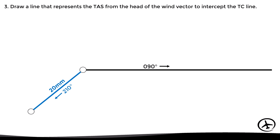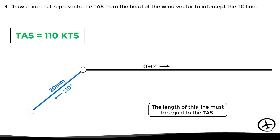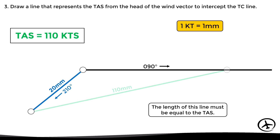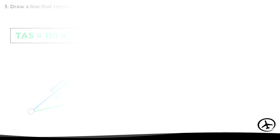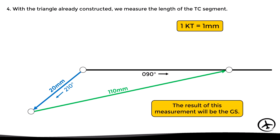After drawing the wind segment, we draw a line starting from the head of the wind segment with a length representing the true airspeed, such that it intercepts the true course line. In this example the true airspeed is 110 knots, so the length must be 110 millimeters, intercepting the true course line of 090. With the triangle constructed, we measure the resulting length of the true course segment, which is equivalent to the ground speed — in this case 100 millimeters, giving a ground speed of 100 knots.